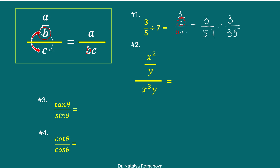Next example: we have x squared over y divided by x cubed y. The denominator y goes to the new denominator. We have x squared divided by y times x cubed times y. We can cancel out x squared and we have 1 over y squared times x.